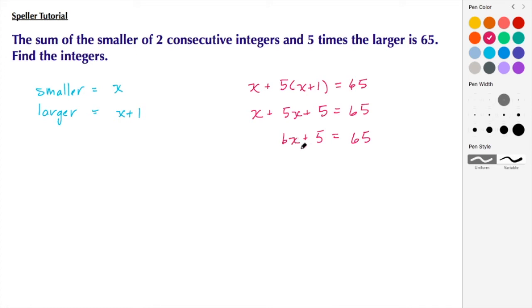Now I want to isolate the 6x, so I'm going to subtract 5 from both sides, so I end up with 6x is equal to 65 minus 5, which is 60. And now I want to isolate just the x by itself, so I'm going to divide both sides by 6. Here we see that x turns out to be 60 divided by 6, which is 10.